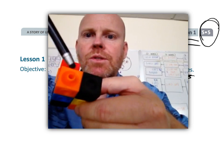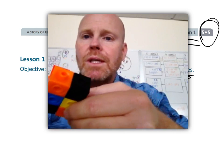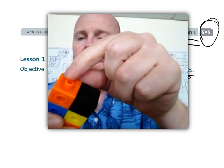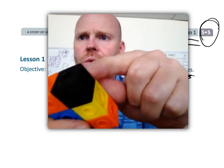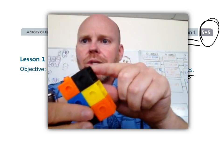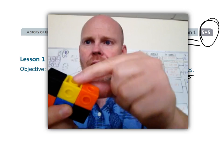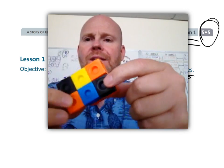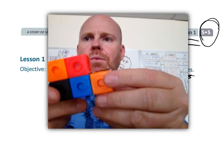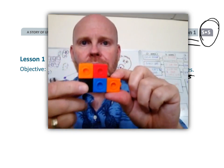So they're counting faces when really this whole orange thing is one cube, this whole black thing is one cube, and this yellow one is one cube. That's the big thing to watch out for—students who are counting faces when they're really supposed to be counting cubes.